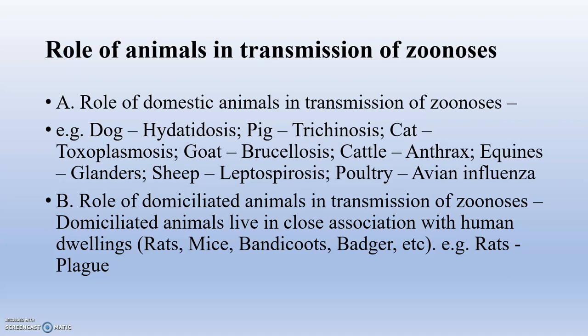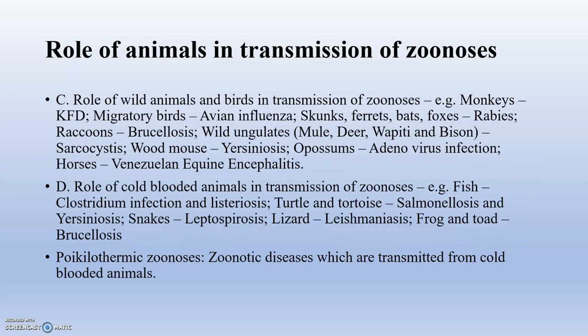Role of domiciliated animals in transmission of zoonosis: mainly rats, mice, bandicoots, and badgers — transmitting plague and leptospirosis. Role of wild animals and birds: wild animals carry a flora of diseases and transmit them whenever humans have contact with wildlife. Role of cold-blooded animals: fish-borne, lizard-borne, frog and toad-borne diseases — poikilothermic zoonoses transmitted from cold-blooded animals.